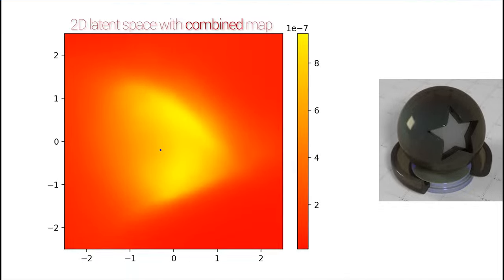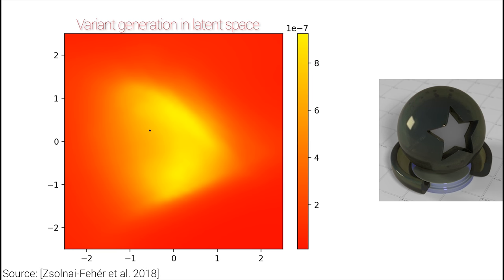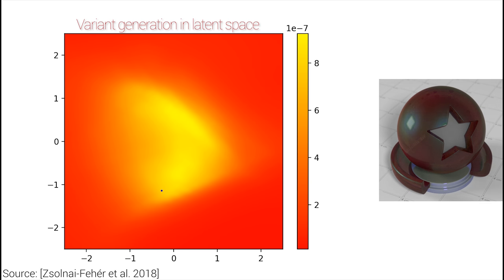In another application, we took a photorealistic material model and wanted to visualize other materials that look similar to it. However, in order to do this, we need to explain to the computer what it means that two images are similar. This is what we call a similarity metric.